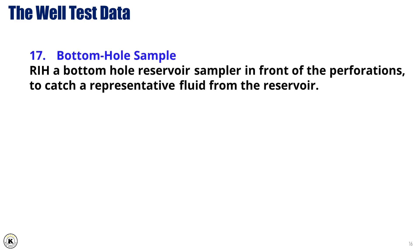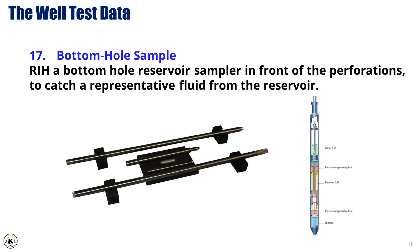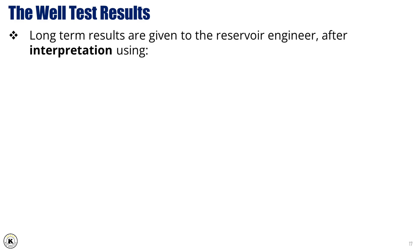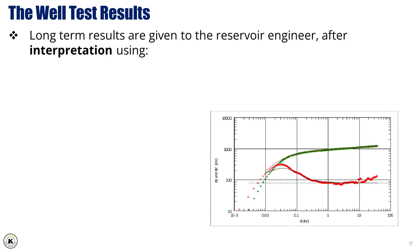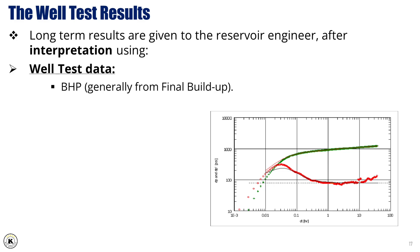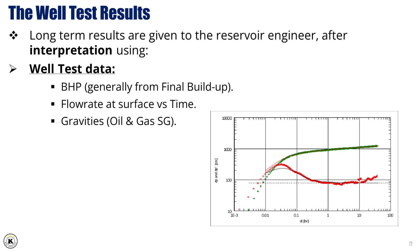17. Bottom Hole Sample — a bottom hole reservoir sampler is run in-hole in front of the perforations to capture a representative fluid sample directly from the reservoir, ensuring it accurately reflects the reservoir's conditions. Long-term well test results are given to the reservoir engineer after interpretation using well test data, including bottom hole pressure (generally from the final buildup), flow rate at surface versus time, and specific gravities of oil and gas.